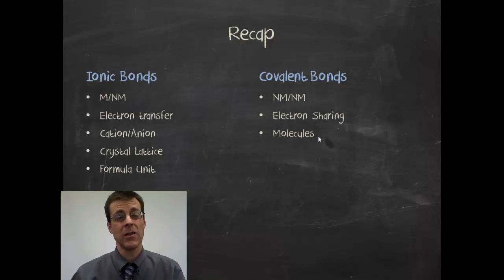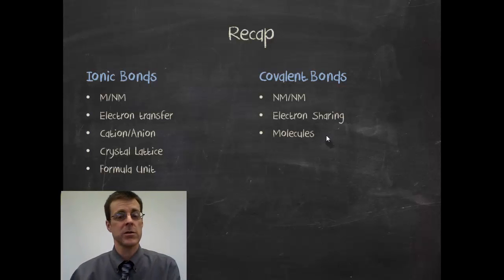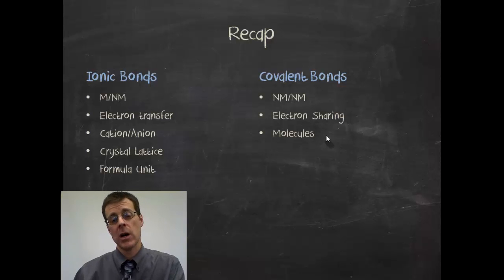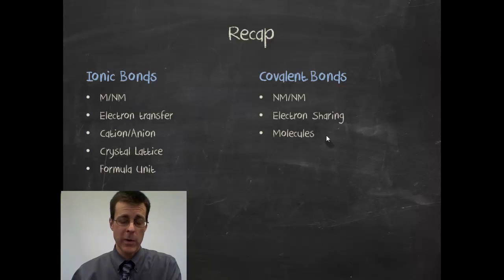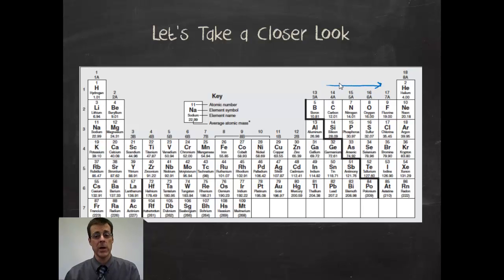Covalent bonds, on the other hand, happen between two nonmetals and involve electron sharing — those are the true molecules. One of the reasons ionic bonds form between metals and nonmetals while covalent bonds form between two nonmetals has to do with electronegativity. Nonmetals have a higher electronegativity, so they pull electrons toward themselves, and metals have a low electronegativity, so they don't.